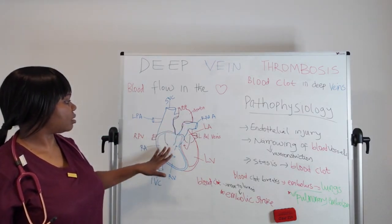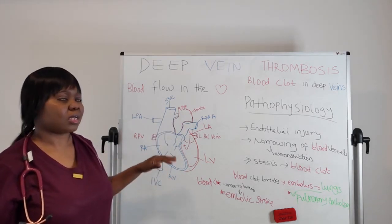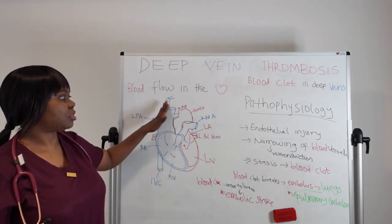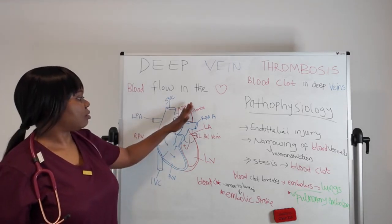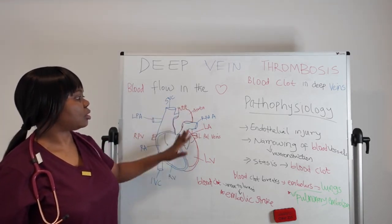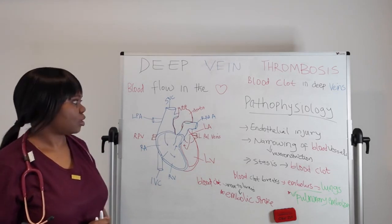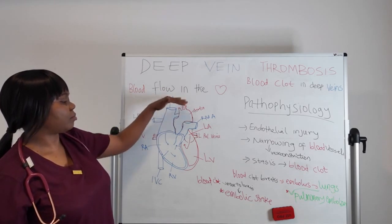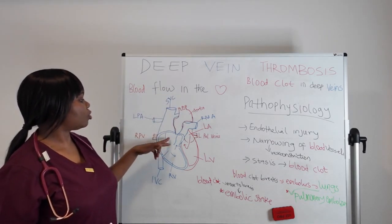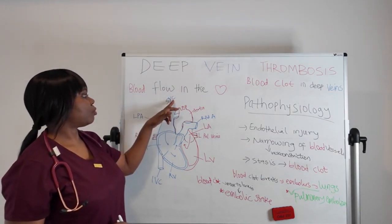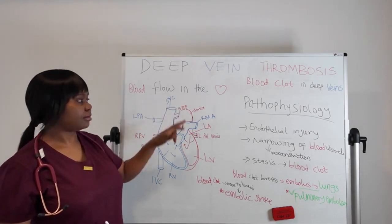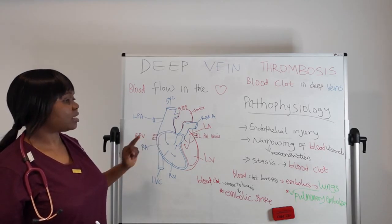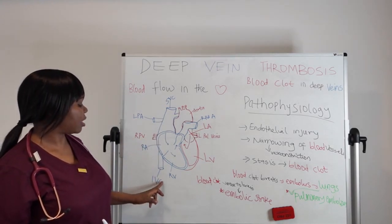Looking at this diagram, I've differentiated it with two colors. The right side shown in blue represents deoxygenated blood; the left side in red shows oxygenated blood. Blood coming from the upper extremities — the head and hands — is emptied into the right atrium through the superior vena cava, and blood from the lower extremities is emptied into the right atrium through the inferior vena cava.